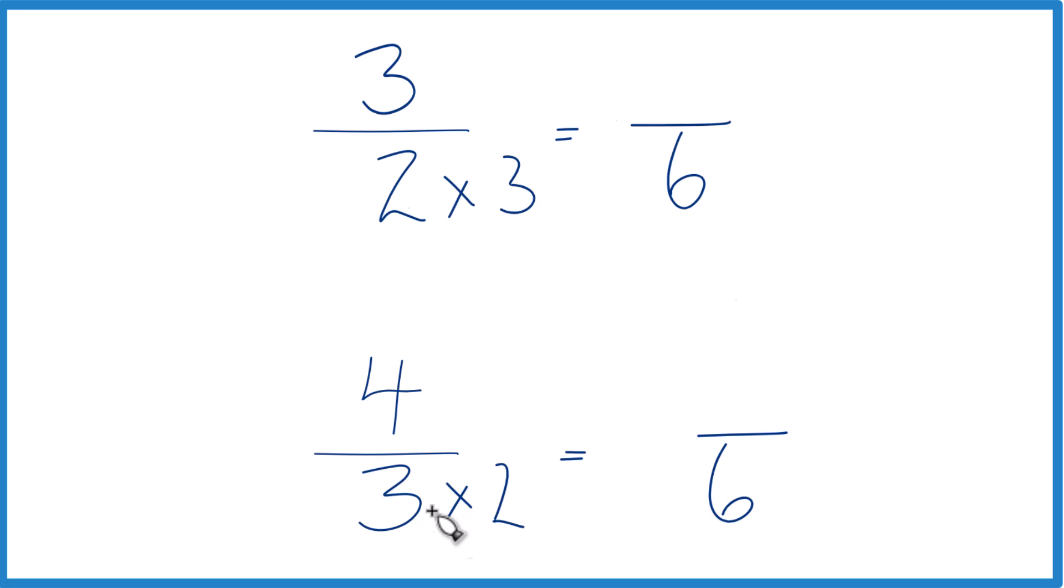But we can't just multiply the denominator by 2. We do need to multiply the numerator by 2 as well. 2 over 2 is 1. So we're just multiplying by 1. We don't really change the value, just the way it's written. 4 times 2 is 8. 8 over 6, that's an equivalent fraction to 4 thirds. They have the same value.